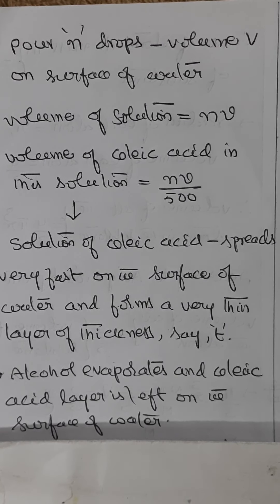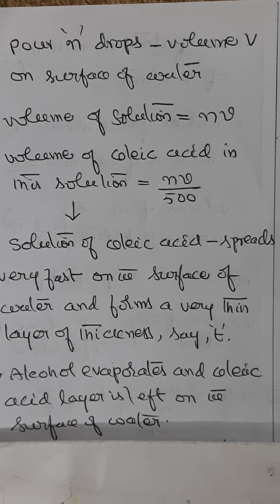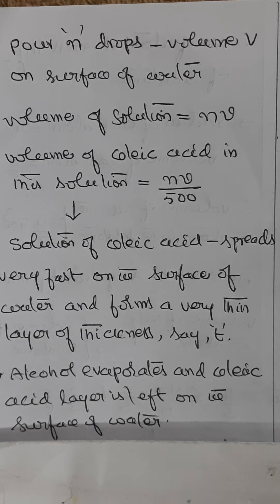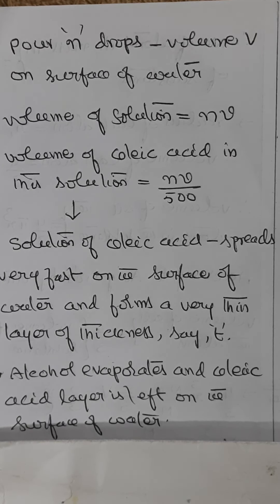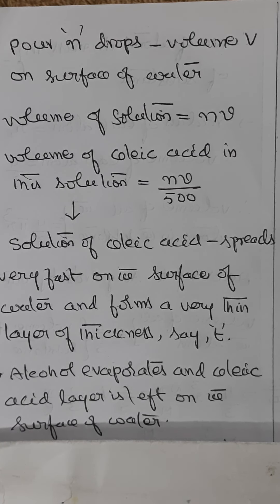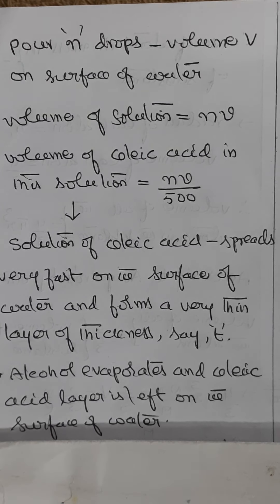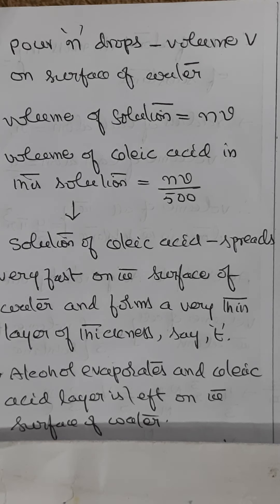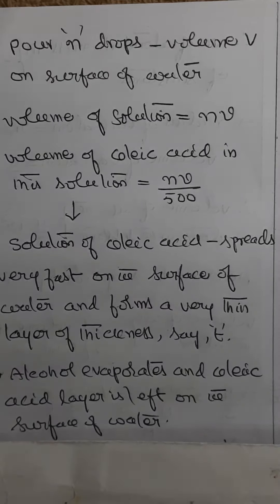Pour N drops of this solution of volume V each on the surface of water in a broad vessel. The volume of the solution is N into V, and the volume of oleic acid in this solution is NV by 500. This solution of oleic acid spreads very fast at the surface of water and forms a very thin layer of thickness T. The alcohol evaporates and the oleic acid layer is left on the surface of water.